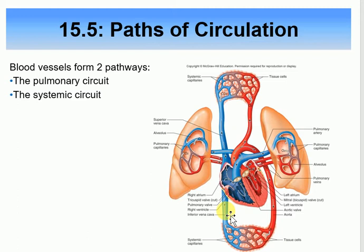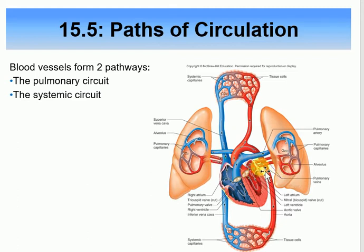After leaving the right ventricle, blood goes to the pulmonary trunk, then to the right and left pulmonary arteries, to the right lung and left lung. It will come back through the pulmonary veins — which are red — back to the left atrium. From the left atrium it goes through the bicuspid valve to the left ventricle.